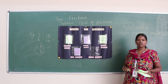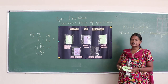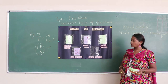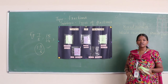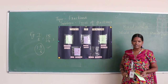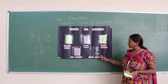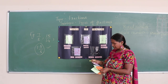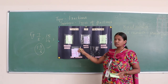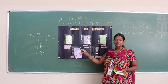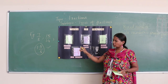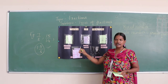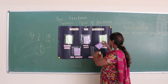Now we have unlike fractions. These are 2 or more fractions which have different denominators — they are called unlike fractions. For example, 5 upon 8 and 4 upon 2: as you can see, the denominators 8 and 2 are different, so these are unlike fractions.